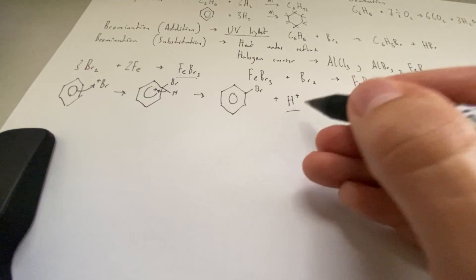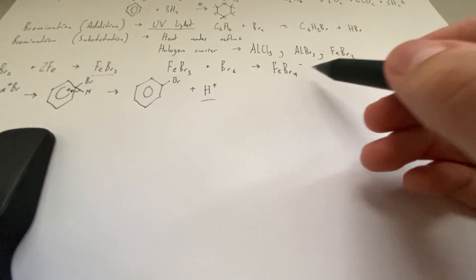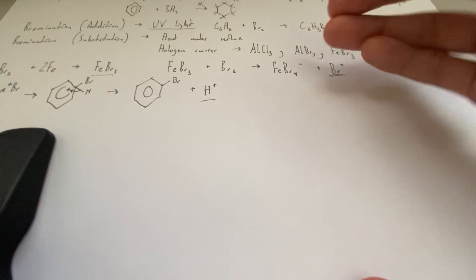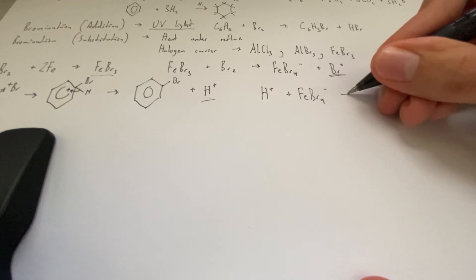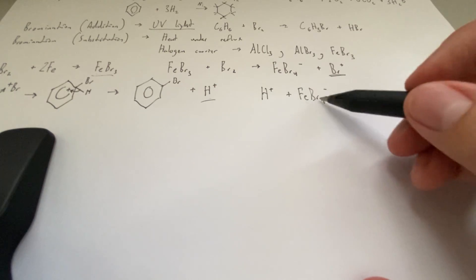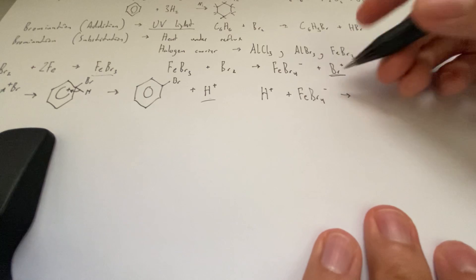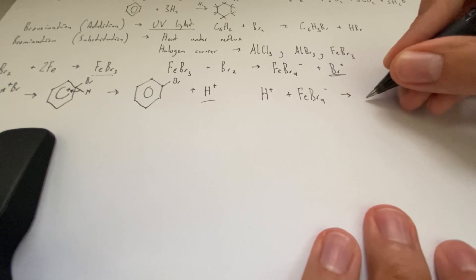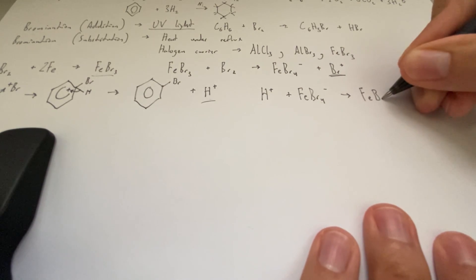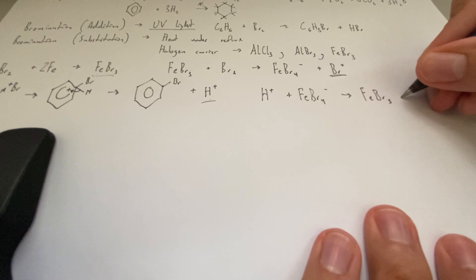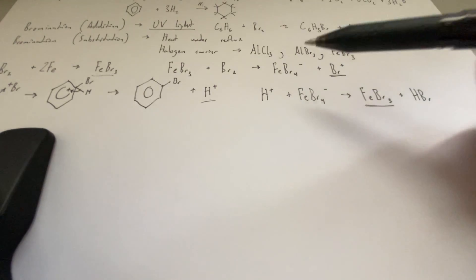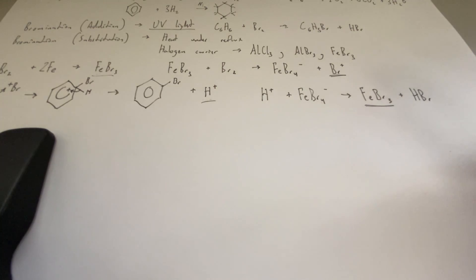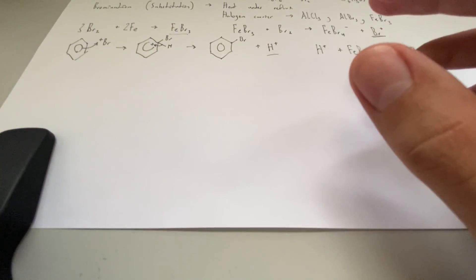Now, what happens to this is, if you remember, we have this FeBr4 minus. So we're just taking away this bromine. And we get FeBr3 again, and we get hydrobromic acid, and that should be stable. But you'll notice that we've gotten our catalyst back. It had briefly become FeBr4, now it's back to FeBr3, so it can be used over and over again.